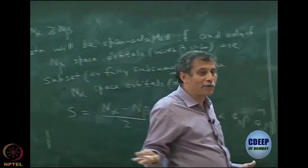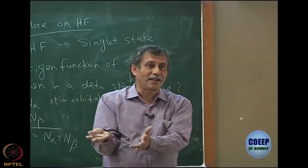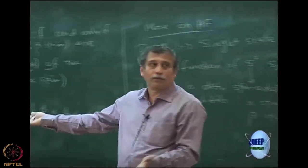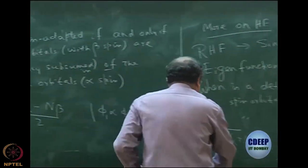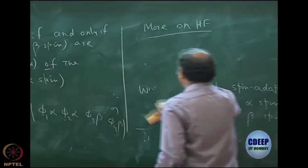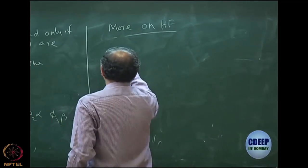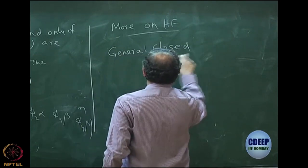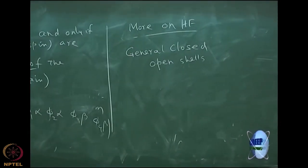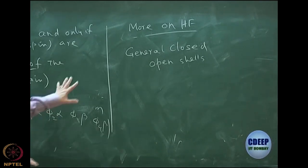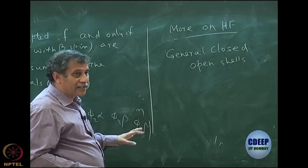RHF by construction is spin-adapted, because we have made sure that the alpha spin orbitals have identical space parts as the beta spin orbitals. So it is by construction spin-adapted and S=0, which means it is a singlet state. Now I present two different types of Hartree-Fock useful for open shell systems: ROHF and UHF.